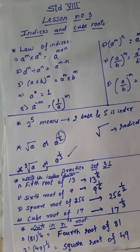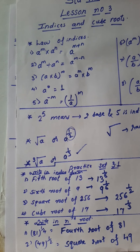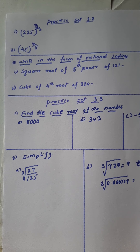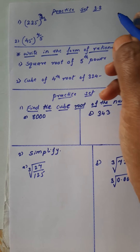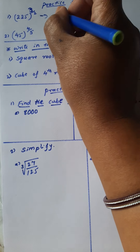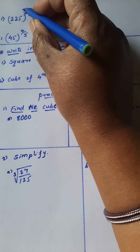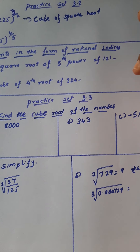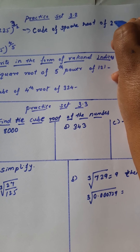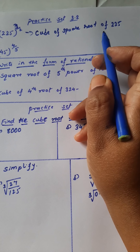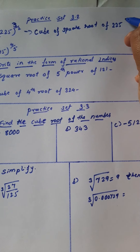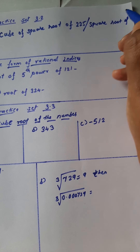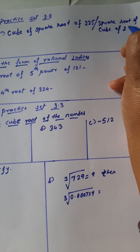Now we have covered laws of indices and practice set 3.1. Next we will study practice set number 3.2. The question is 225 raised to 3 upon 2. In words, we write: cube — because the power is 3 — of the square root of 225. In another way you can also write: square root of the cube of 225.